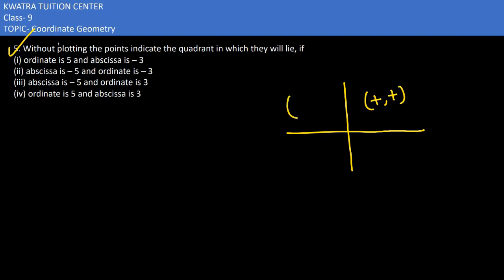X is positive, Y is positive. Second quadrant: X is negative, Y is positive. In the third quadrant you have negative, negative. In the fourth one you have positive, negative.